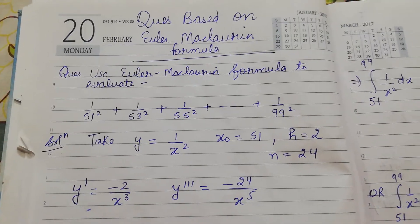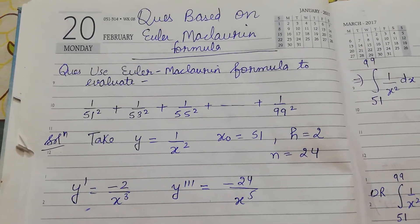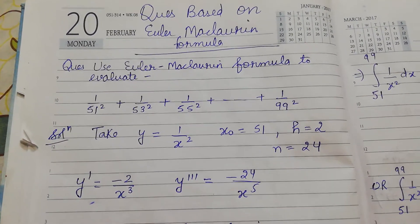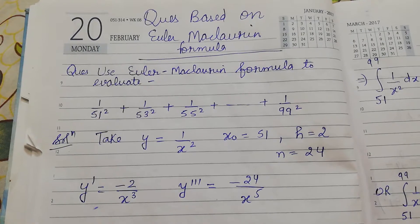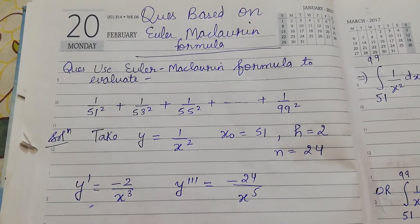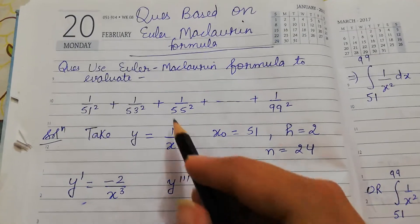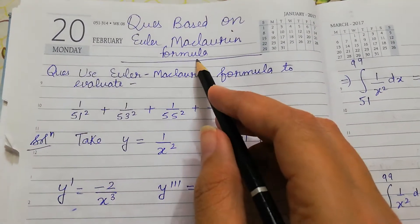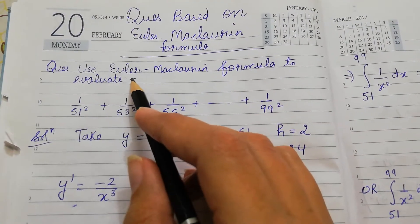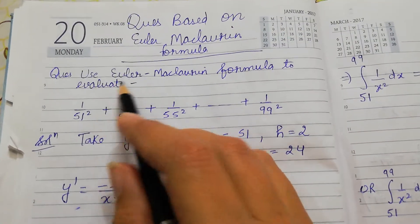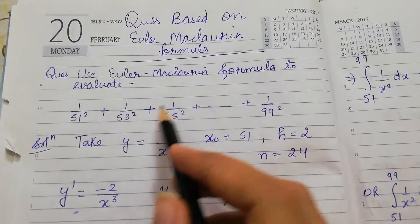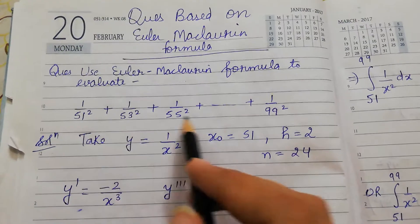Good morning students. On the demand of one student among you, I am here with the solution of this question. The question is based on the Euler-McLaurin formula, and the statement given is: using the Euler-McLaurin formula, we have to evaluate this series.